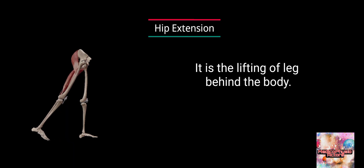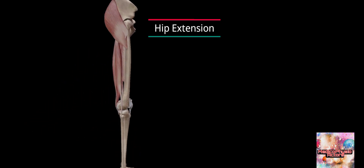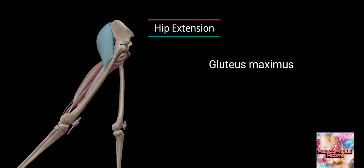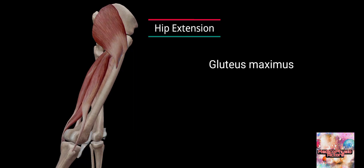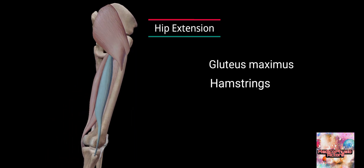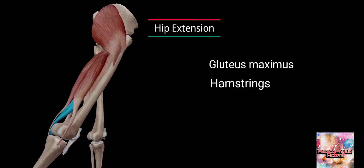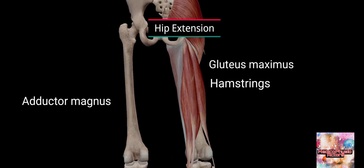Hip extension. It is the lifting of the leg behind the body. The muscles acting are gluteus maximus, hamstrings, and the extensor part of adductor magnus.